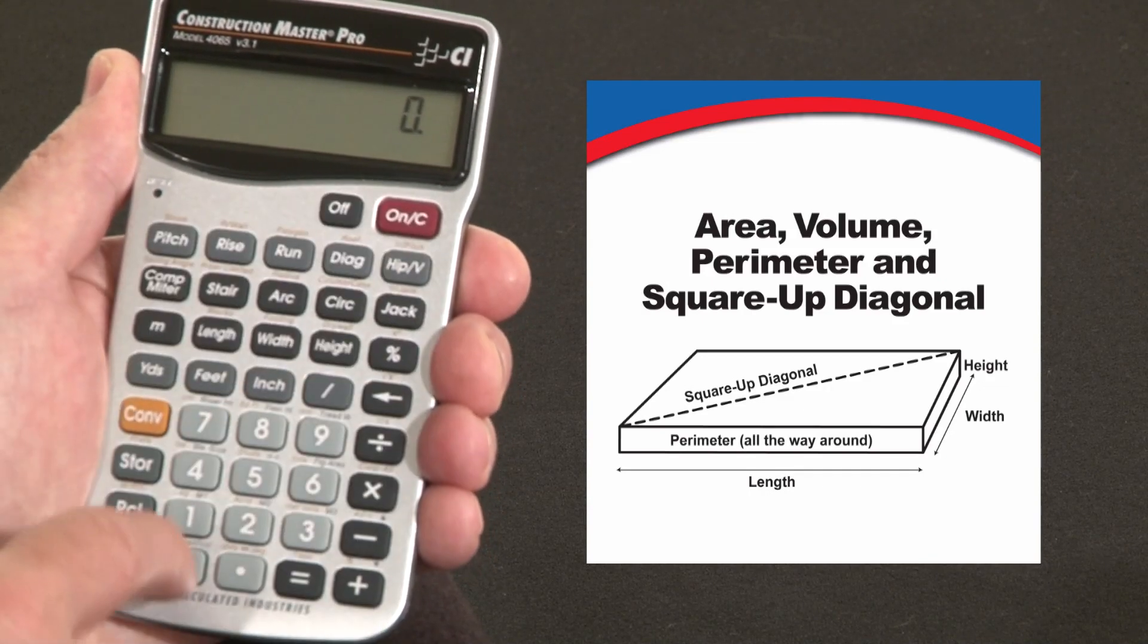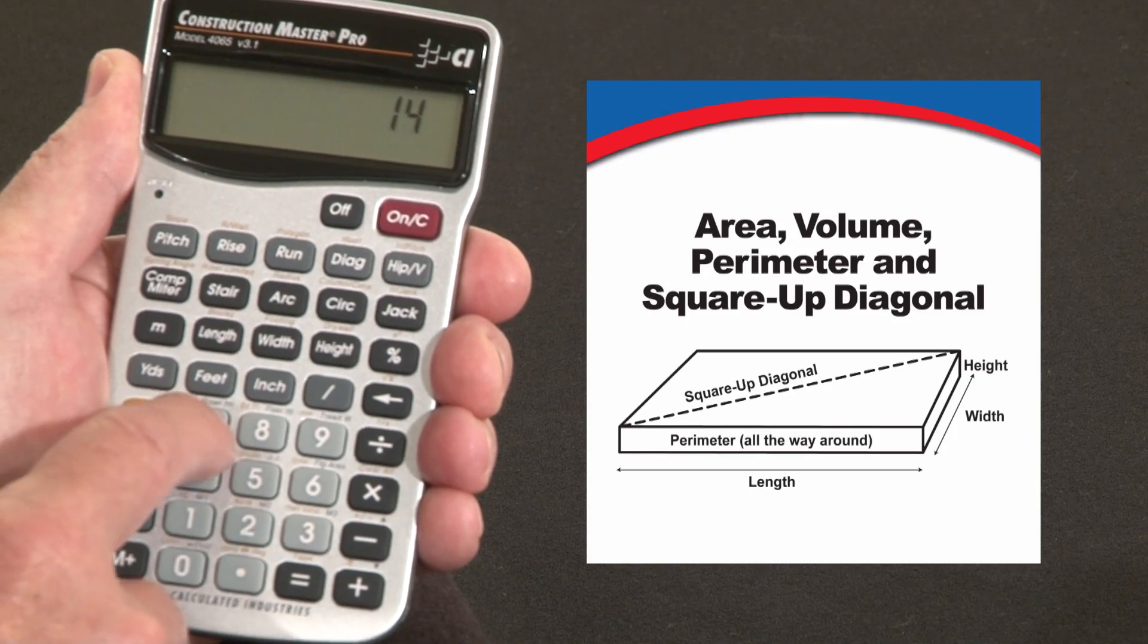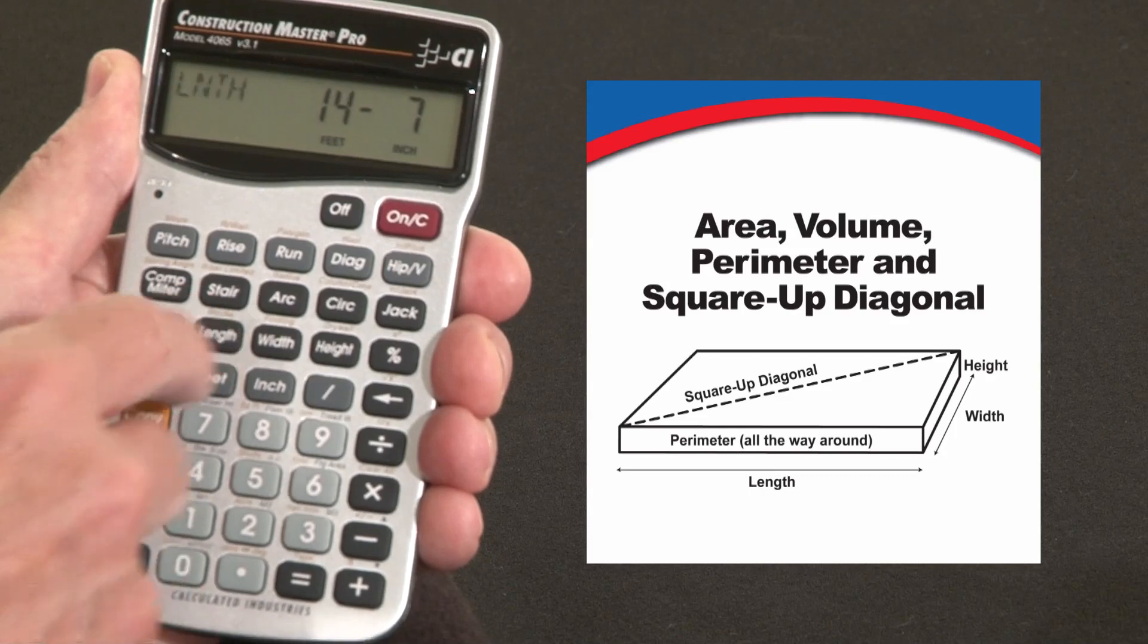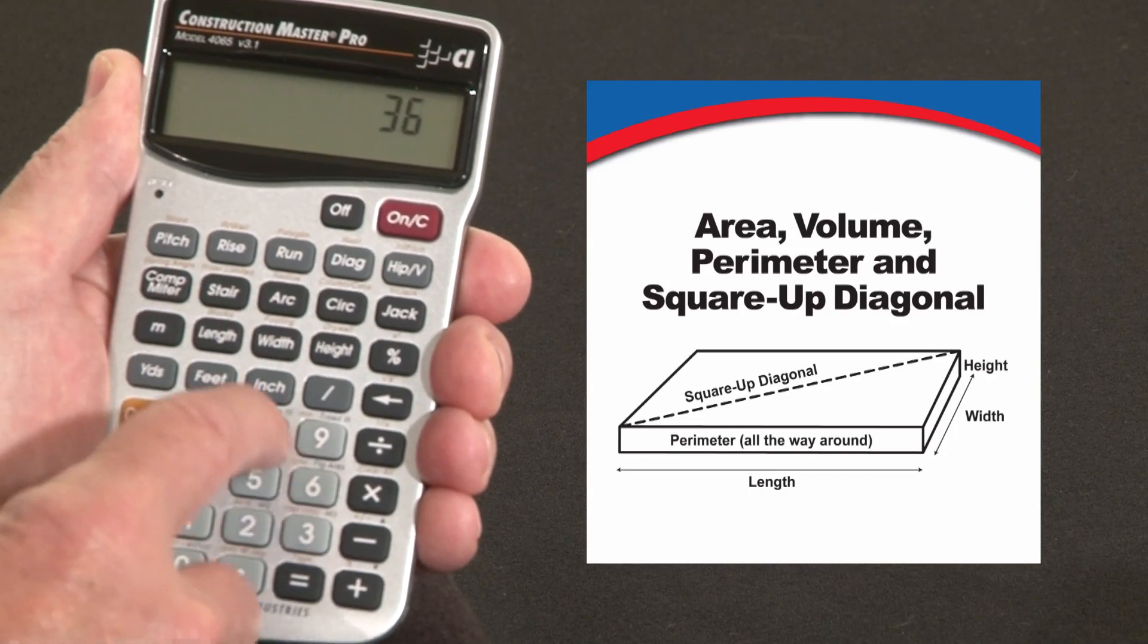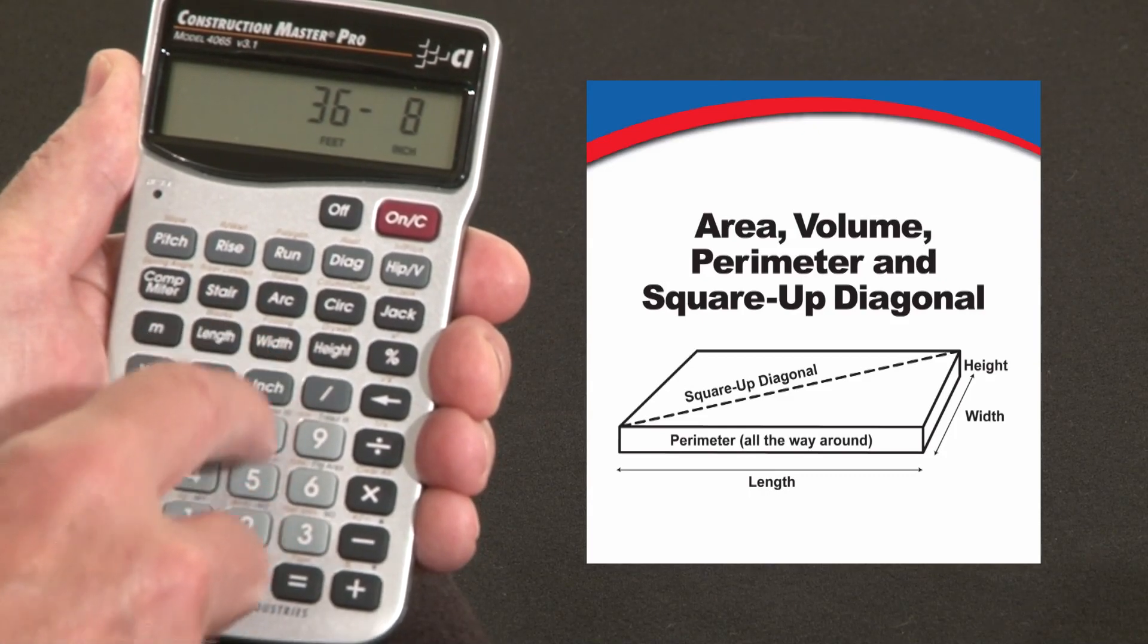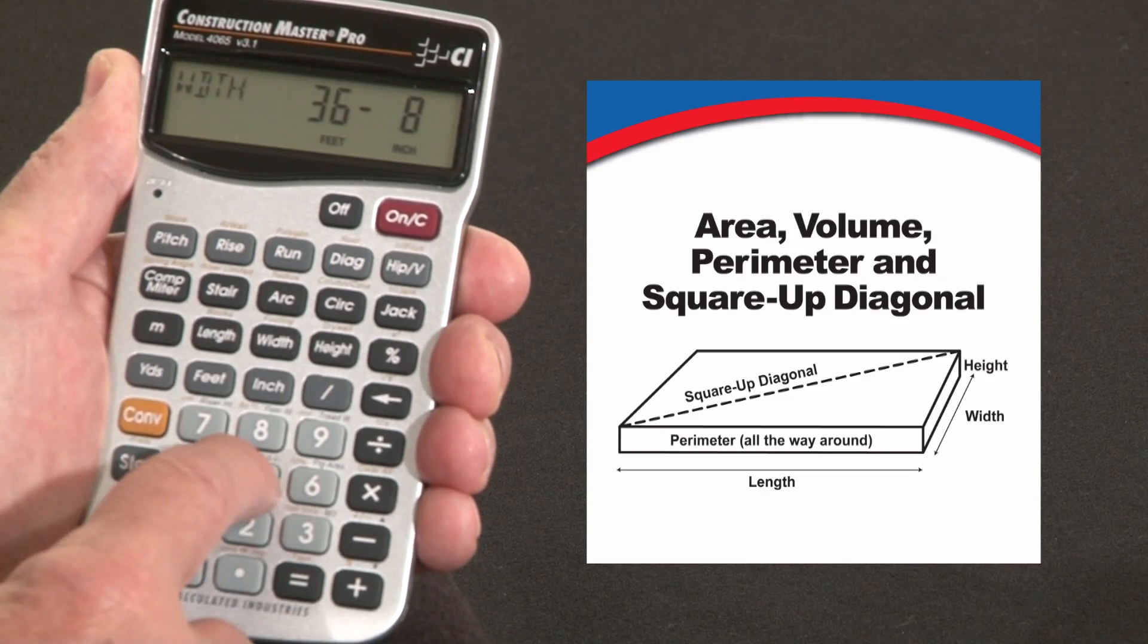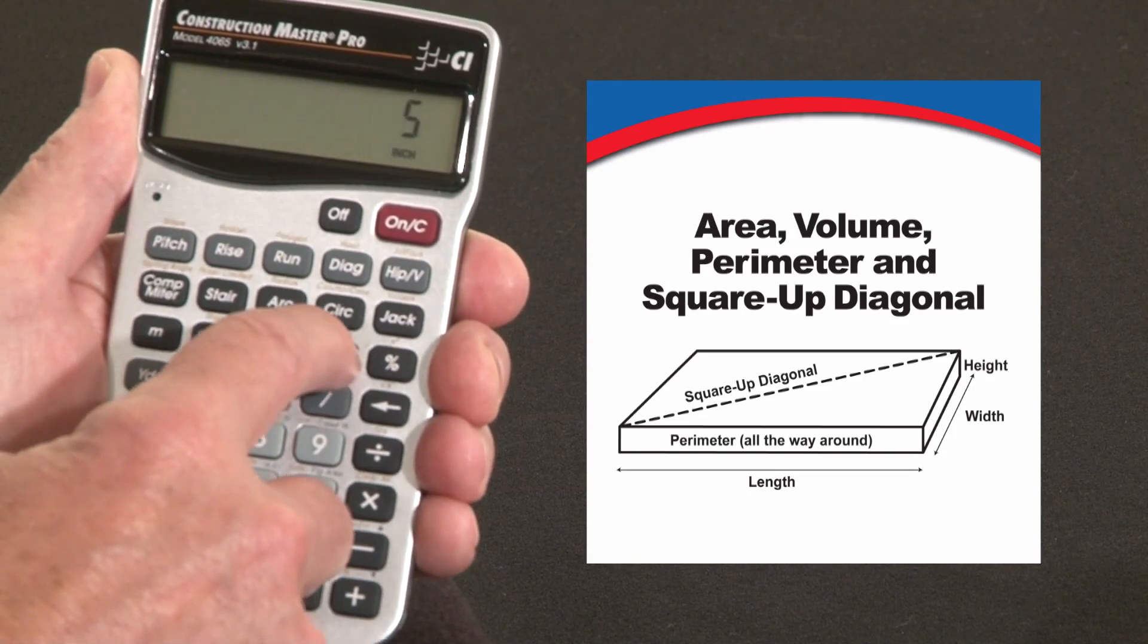Let me start off with a driveway or a pad. Let's say 14 feet 7 inches is the length and 36 feet 8 inches is the width. And let's say this is a 5 inch thick pad, 5 inches of height or thickness.